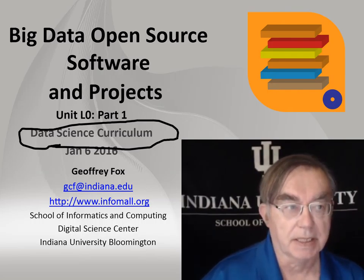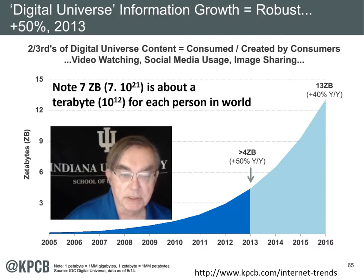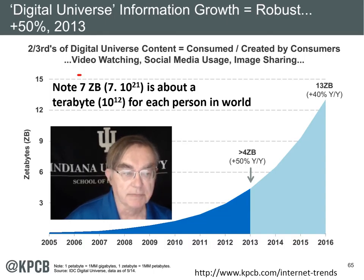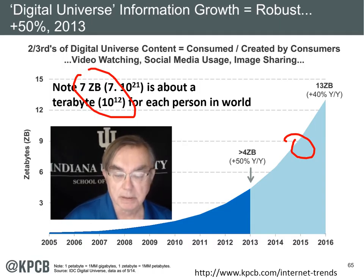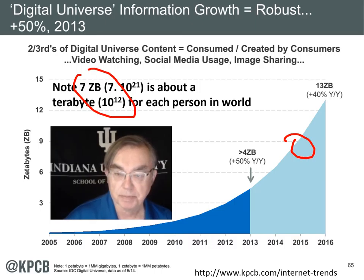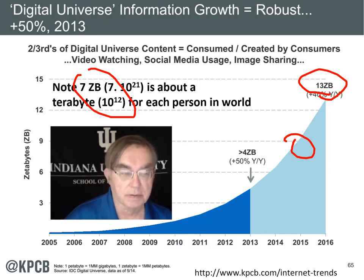This slide, in a nutshell, explains why this whole area is interesting. We just have an incredible amount of data — around a terabyte for every person in the world. That's seven zettabytes. This particular plot hasn't been updated since it was made in 2013, but it extrapolates for another year to 13 zettabytes at the end of this year.